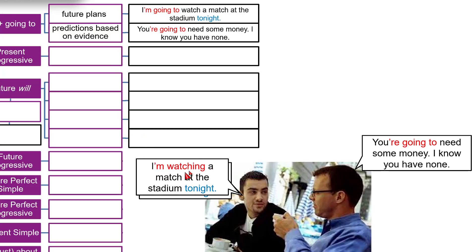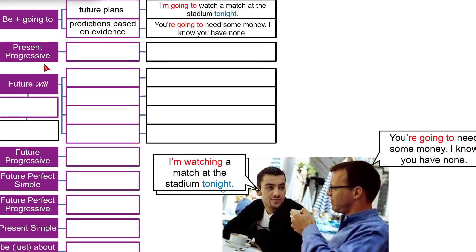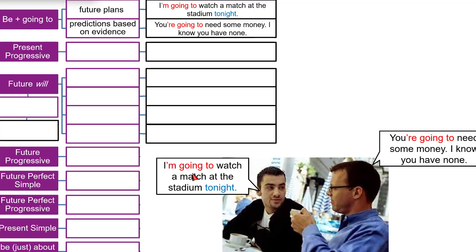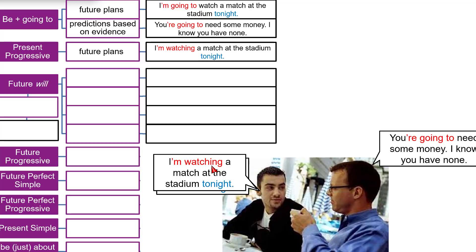"I'm watching a match at the stadium tonight." Again, this is future, but this time we used the present progressive. We don't usually use present progressive for the future unless we're talking about future plans — the same usage as 'be going to'. So you have a choice: you can say "I am watching a match" or "I am going to watch a match." Both are correct.